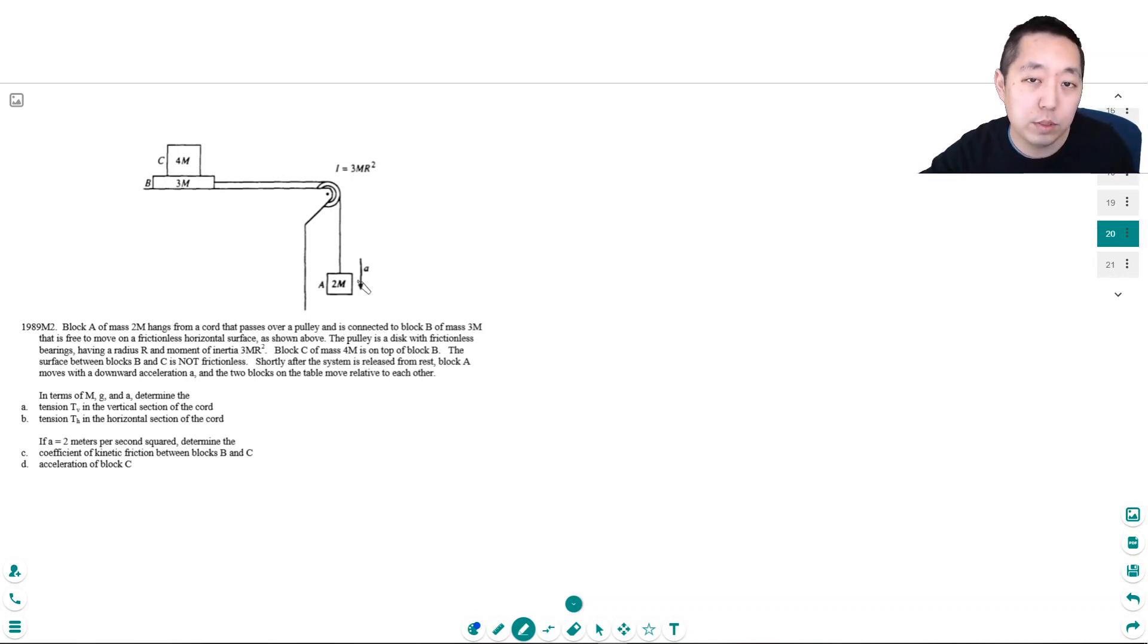I think this problem gives you all the information, so give it a shot if you get stuck somewhere, or if you're able to do it, then come back and finish watching the video. I have a block of mass 2m hanging on a cord that passes over a pulley and connected to block B of mass 3m that is free to move on a frictionless horizontal surface as shown above.